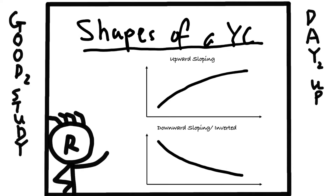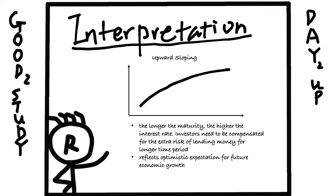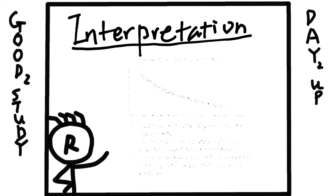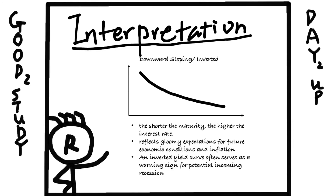Now you may ask, why does it matter? What does it even mean? An upward sloping yield curve, which is what a normal yield curve should look like, means the longer the maturity of the bond, the higher the interest rate. It also reflects optimistic expectations for future economic growth. A downward sloping yield curve means the shorter the maturity, the higher the interest rate — it reflects gloomy expectations for future economic conditions and inflation. An inverted yield curve often serves as a warning sign for a potential incoming recession.